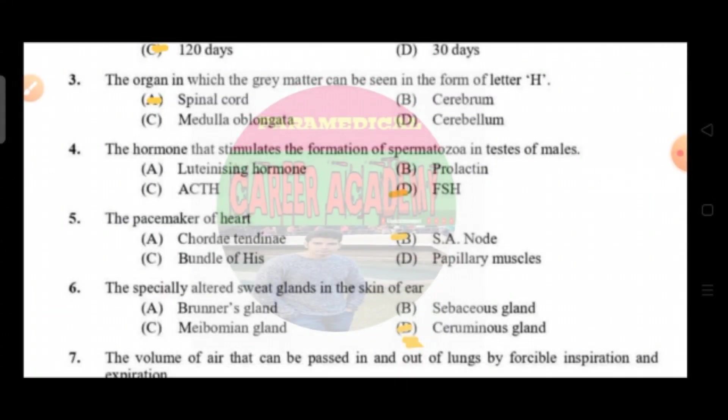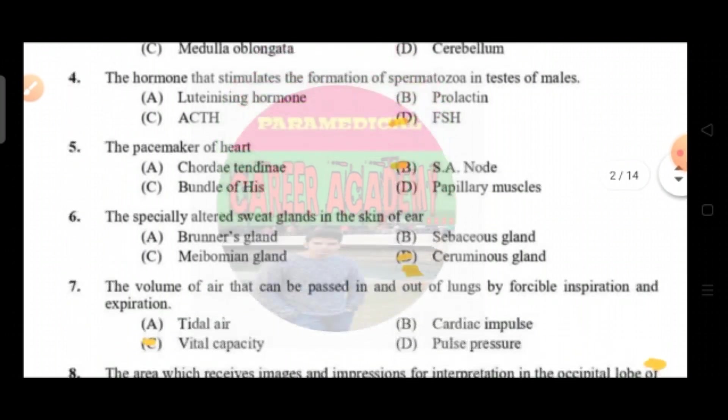Question number three: the organ in which the gray matter can be seen in the form of the letter H. Option A spinal cord, option B cerebrum, option C medulla oblongata, and option D is cerebellum. The correct answer is option A, that is spinal cord.